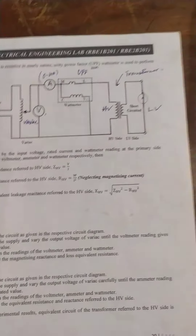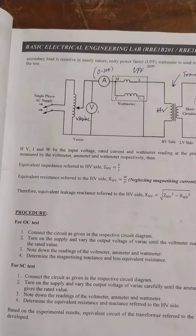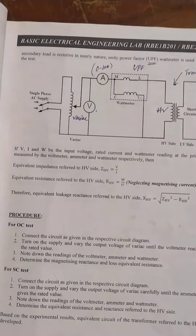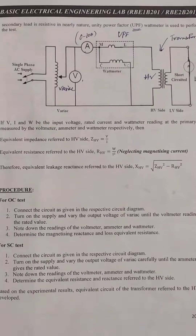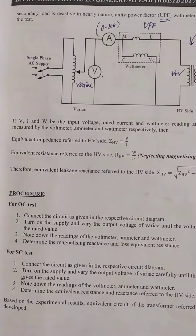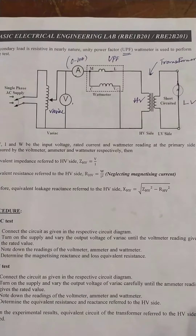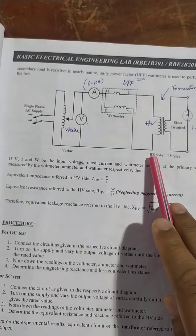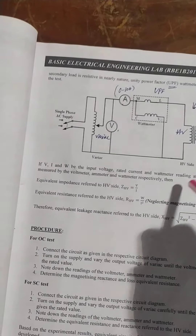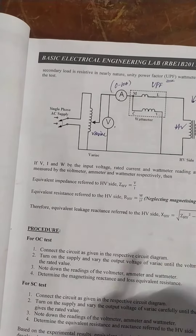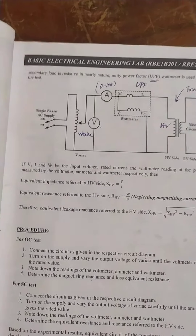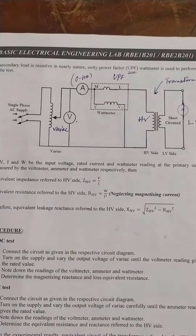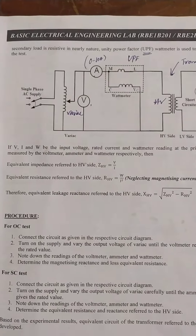To find the rated current: it is a 2 kVA transformer. kVA means 1000 volt-amperes, so 2 kVA equals 2000 VA. The rated current equals 2000 divided by 230, which is approximately 8.7 to 9 amperes. That is the rated current we will be working with.